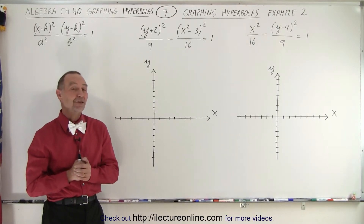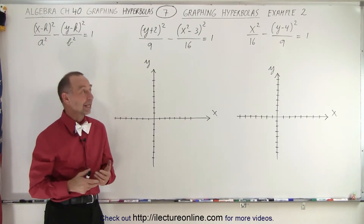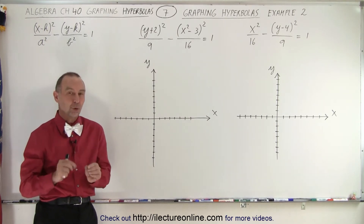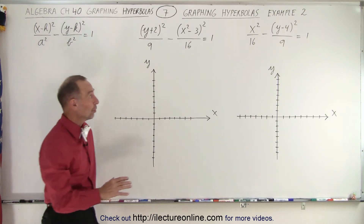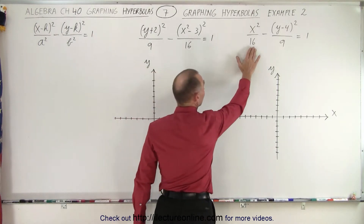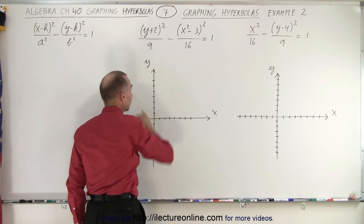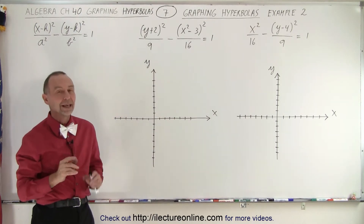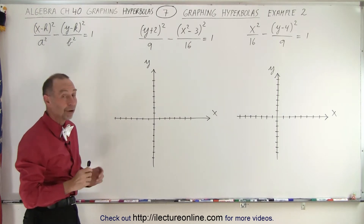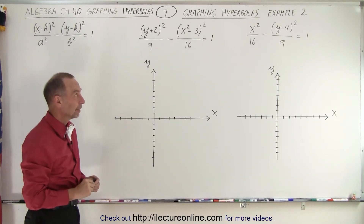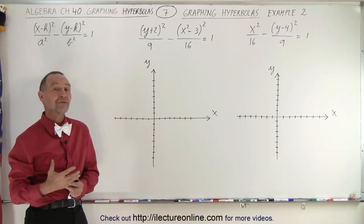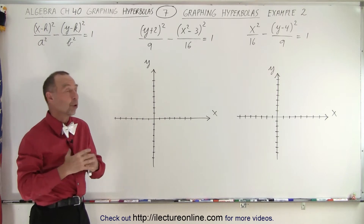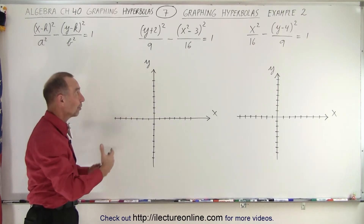Welcome to our lecture online. Now let's graph something a little bit more complicated. Here we have hyperbolas that are not with the center at the origin but offset to some extent. Notice that here we have the x term that's positive, and here we have the y term that's positive. It gets a little bit confusing, so we've got to be very careful and pay very close attention to how we actually graph these. It's not difficult per se, but we need to understand what direction the hyperbola is going to open up and how things are being offset.